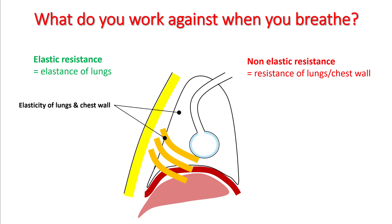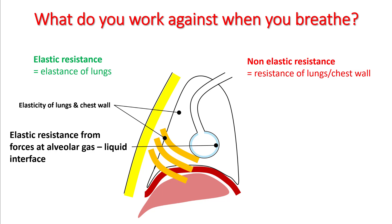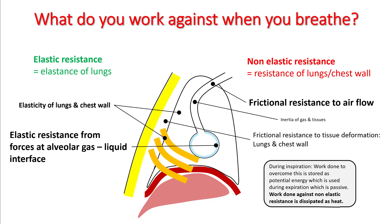The elastic portion of the lungs comes from the elasticity of lungs and chest wall, though this is a very small component. The bigger component comes from the forces at the alveolar gas-liquid interface. The resistive component comes from frictional resistance to airflow, inertia of gas and tissues, and frictional resistance to tissue deformation in lungs and chest wall.